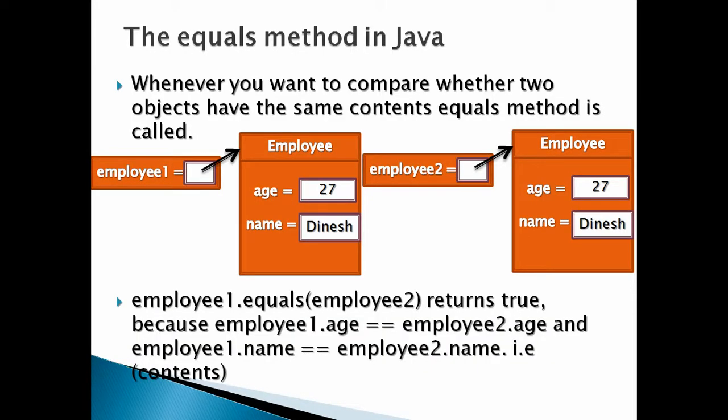Friends, the equals method is implemented in the Object class. The equals method in Object class has the signature: public boolean equals, taking an Object type as parameter. This method in Object class returns true if the object calling equals method is referring to the same object which is coming as parameter to the equals method. Whenever you want to compare whether two objects have the same contents, equals method is called.